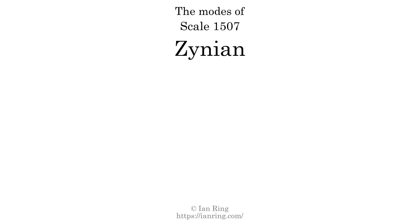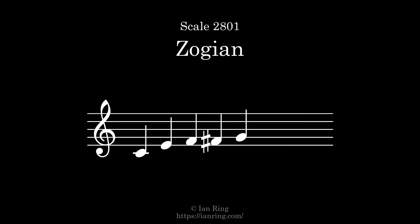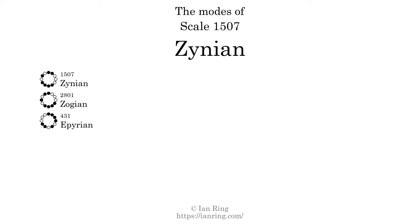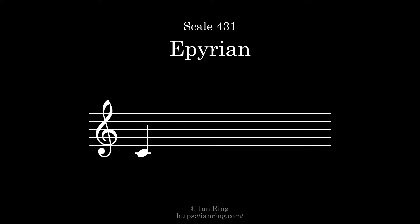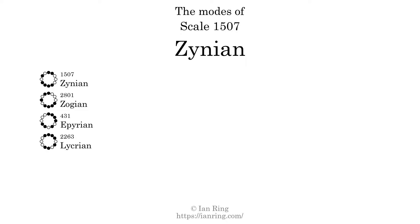This scale has seven modes. The first mode is itself. The second mode is scale 2801, also known as Zogen. It sounds like this. The third mode is scale 431, also known as Aperion. It sounds like this. The fourth mode is scale 2263, also known as Lycrian. It sounds like this.